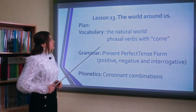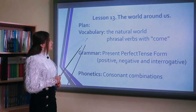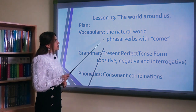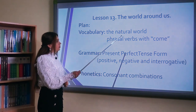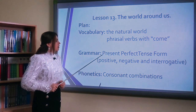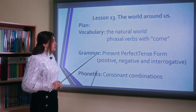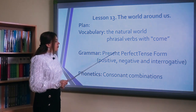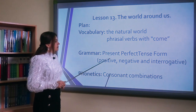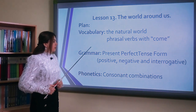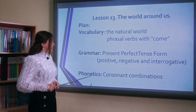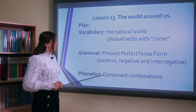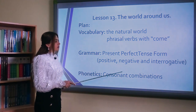The world around us. In the first vocabulary section, we have two topics: the natural world and the phrasal verbs with come. In the grammar section, we are going to discuss the present perfect tense form — positive, negative and interrogative forms. And finally, in phonetics, we are going to look through consonant combinations.